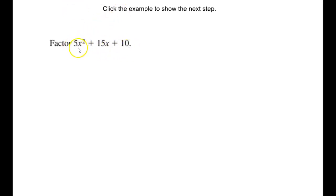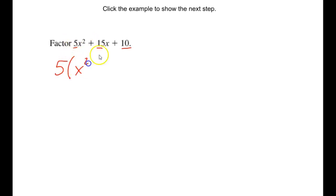Let's look at the first example: factor 5x squared plus 15x plus 10. The first thing I notice is that there is a common factor in all of my terms. Each number is divisible by 5, so I'm going to factor that out first. If I factor out that 5, I get 5x squared divided by 5 equals x squared, 15x divided by 5 gives me 3x, and 10 divided by 5 gives me 2. Now that I've factored out that coefficient, I'm left with a trinomial with a leading coefficient of 1.